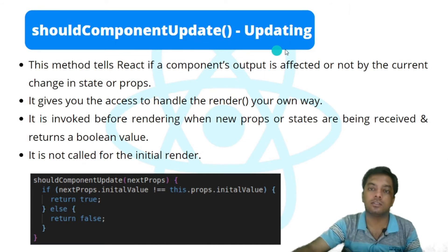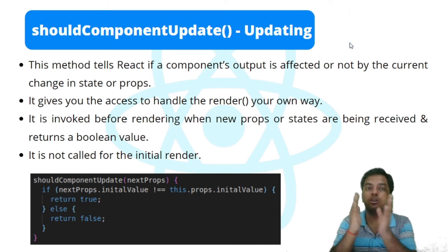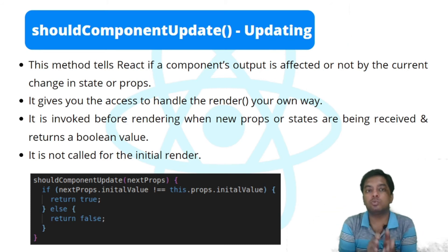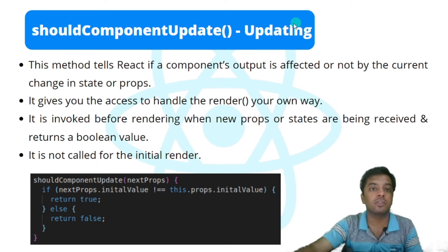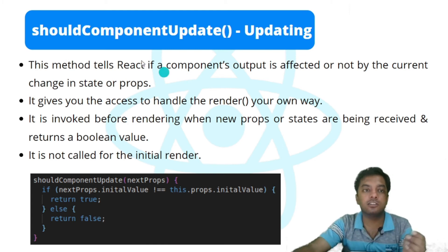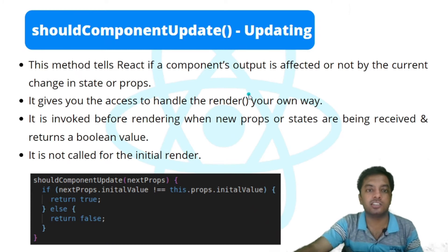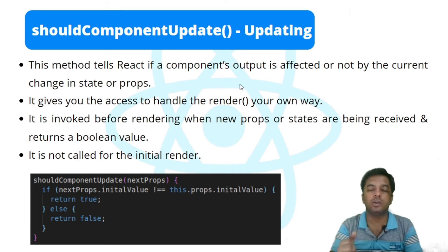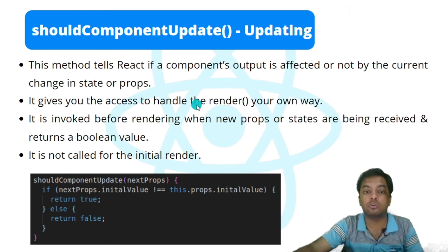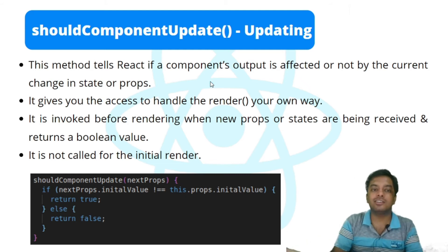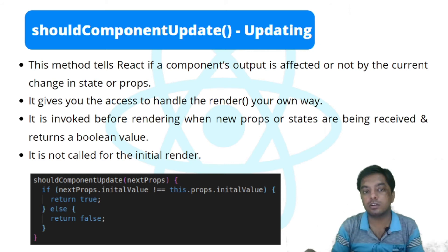Next is shouldComponentUpdate. As the name suggests, it tells us whether we need to re-render the component or not. It tells React if a component's output is affected by the current change in state or props. It is invoked before rendering when new props or state are being received and returns a boolean value. Based on this boolean, React decides whether re-rendering is needed. It is not called on the initial render, since we always need to render the component then.